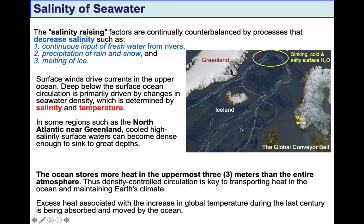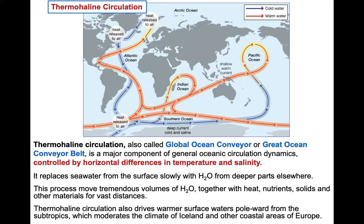That's another reason why seawater sinks very rapidly in winter time in polar regions. The ocean waters store much more heat in the uppermost three meters globally than the entire atmosphere. This sets up density circulation patterns in the ocean waters globally, and these circulation patterns are the most effective ways to transfer heat from lower latitudes, particularly equatorial regions, up towards the higher latitudes.